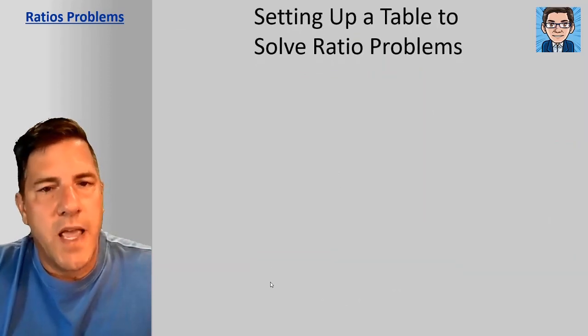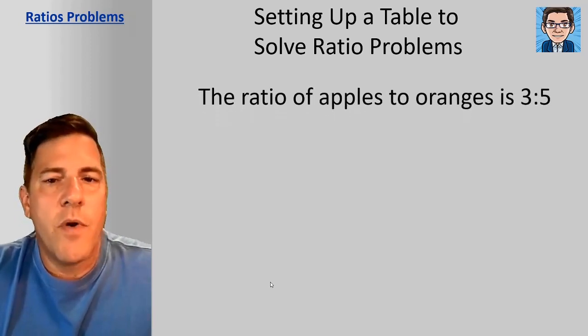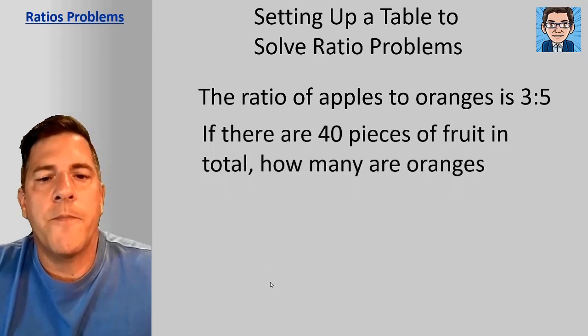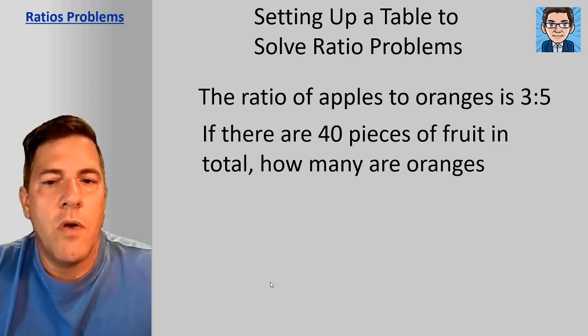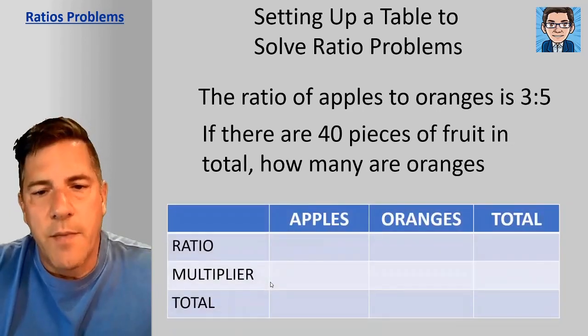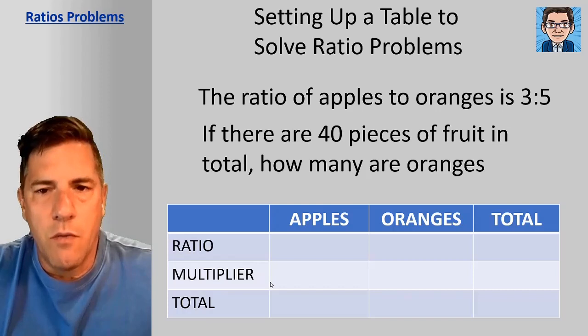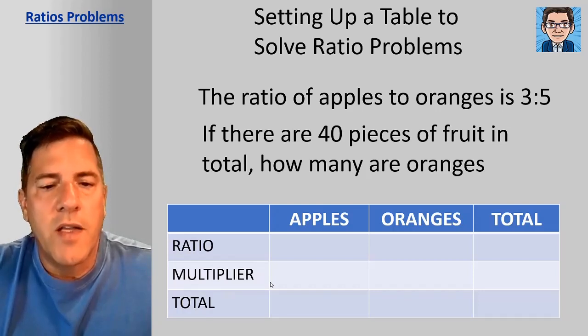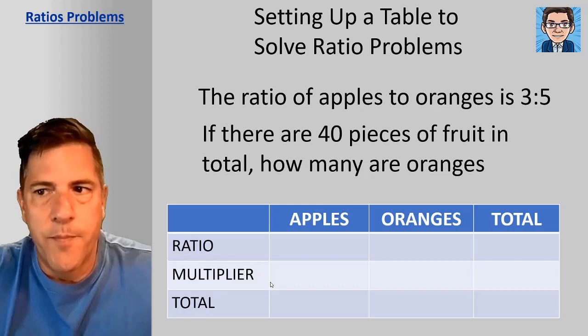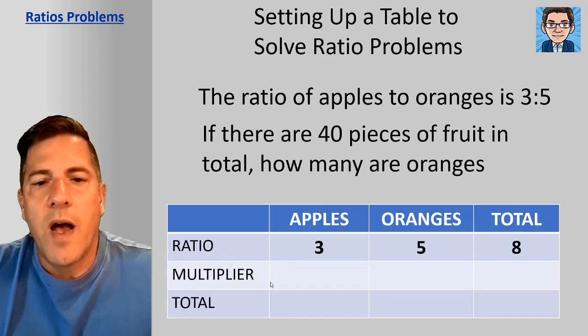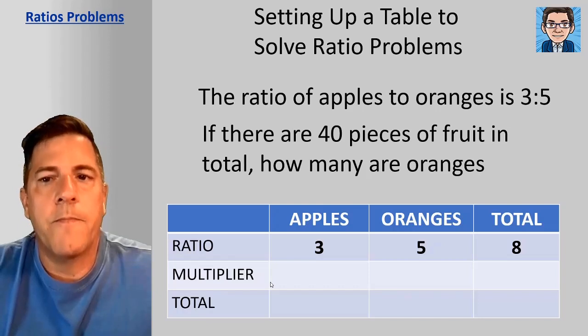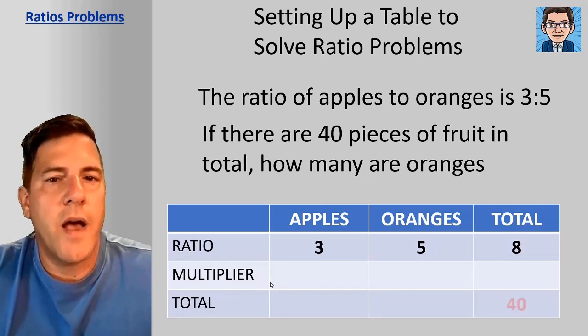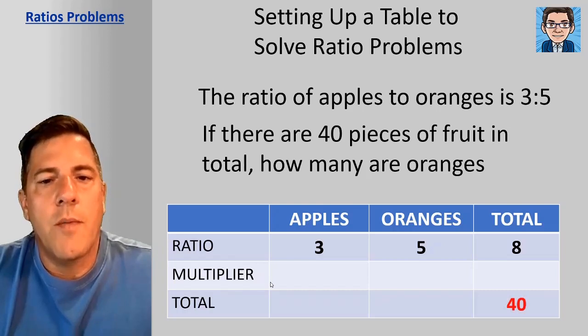So now let's take a look at how we set up a table to solve a ratio problem. So let's go back to that same ratio of apples and oranges, it's 3 to 5. And if the problem is there's 40 pieces of fruit in total with that ratio, so how many pieces of the total fruit are going to be oranges? So we're going to set up a table. The top line of the table is going to be the ratio. The second line is going to be the multiplier. And then the third line is going to be our total. And in the columns, we're going to have the two things that we have the ratios for, but then we're also going to include a total column as well.